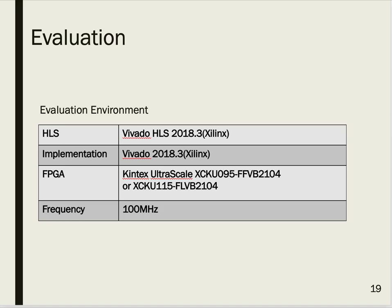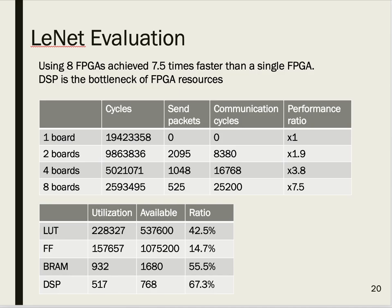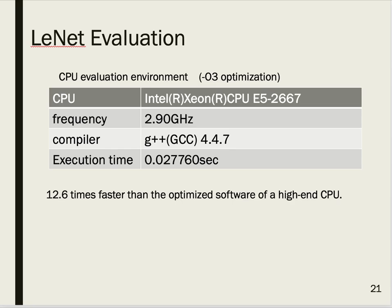Evaluation environments include HLS synthesis tool, Vivado HLS, and implementation tool Vivado, with two FPGA types on FIC-SW. In the ResNet evaluation, using 8 FPGAs achieves 7.5 times faster than a single FPGA, indicating our proposed method has sufficient scalability. DSP is the bottleneck of FPGA resources, but we could effectively use FPGA resources across several FPGAs using the resource prediction formula.